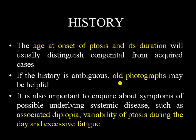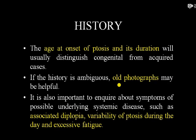It is also important to inquire about symptoms of possible underlying systemic disease such as diplopia — double vision. Ask about variability of ptosis: is there any difference in the ptosis in the morning compared to the evening? In cases of myasthenia gravis, fatigability increases as the day goes on, so if the patient reports that diplopia and ptosis increase during the day, that suggests myasthenia gravis.